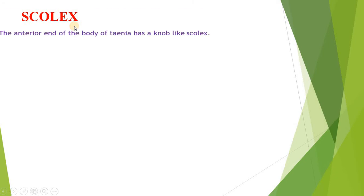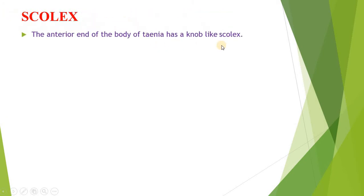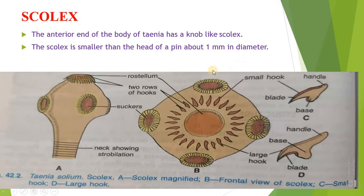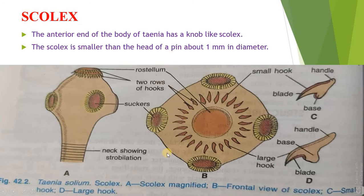Scolex: The anterior end of the body of Taenia has a knob-like scolex part. The scolex is smaller than the head of a pin, about 1mm in diameter. This is the Taenia solium scolex — part A showing the scolex magnified, B the frontal view of scolex, C the small hook, and D the large hook. Now we will discuss in detail about the scolex part.